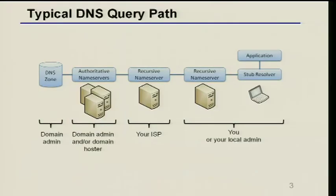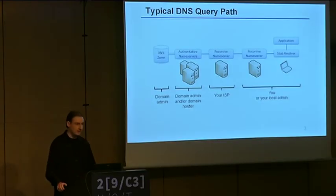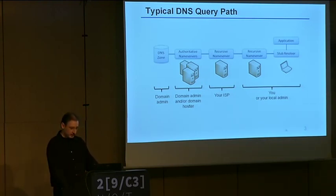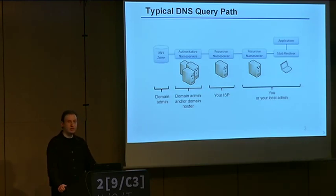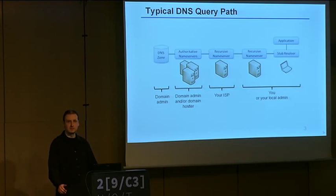Okay, let's start. I assume all of you have heard of DNS and know what it is, but let's make sure we are on the same page. Your application can ask your operating system, your stub resolver, to resolve a name. The stub resolver will ask a recursive name server to do the resolution, since the stub resolver only has a small functionality and can only forward name queries. The recursive name server does all the work, goes to all name servers, gets the results, retries if anything fails. There may be multiple recursive name servers in a chain.